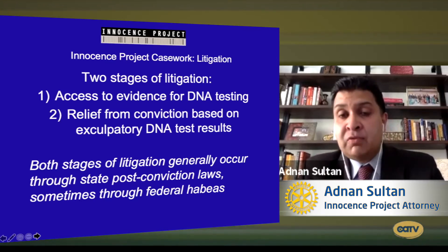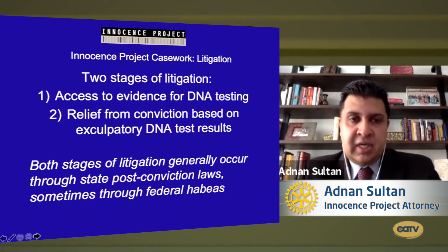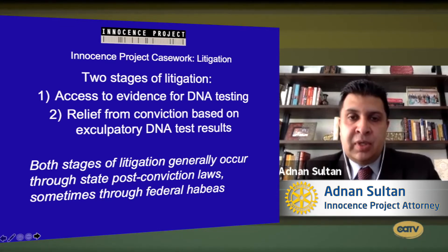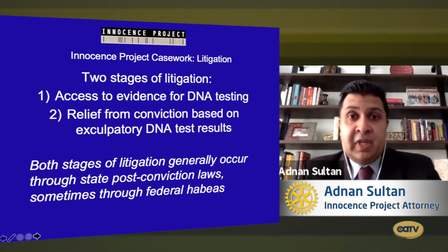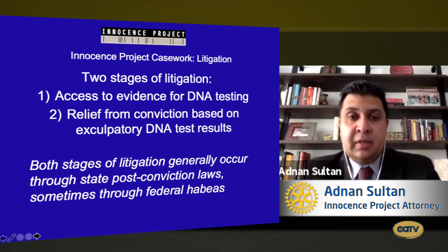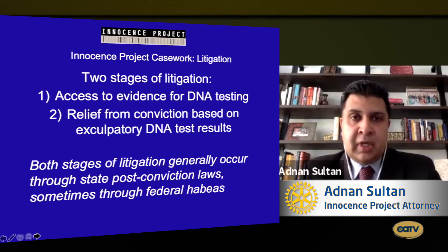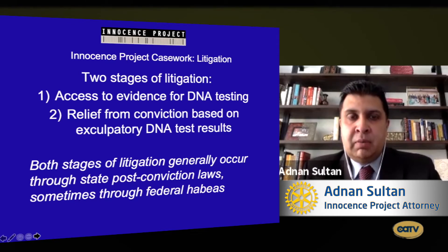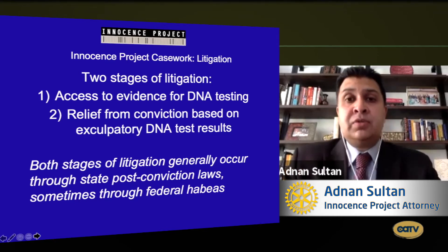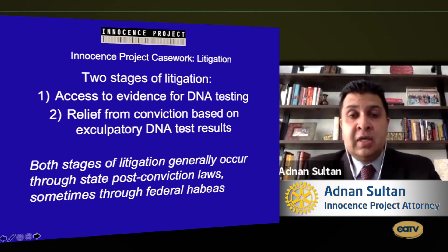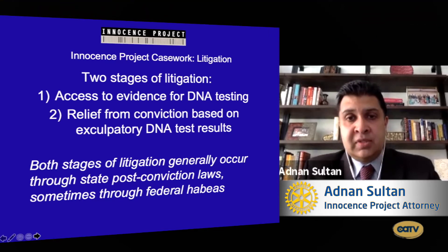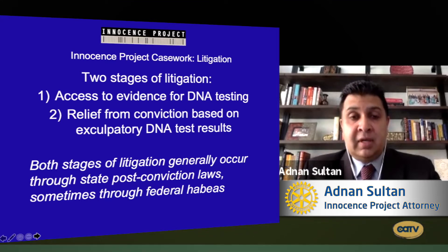One way we search for evidence is on our own — calling police departments, courts, and hospitals, piecing together information from reports to see if they'll help us find it. We also use Freedom of Information Act requests. Another approach is asking the prosecutor to help us look for the evidence. At this point we have a good enough reputation that when we tell a prosecutor we're interested in a case, they'll often take our request seriously — though that's not always the case.